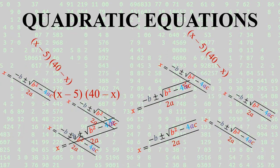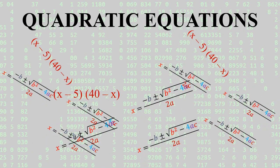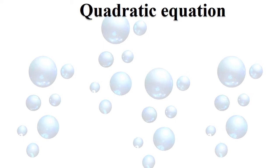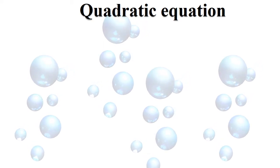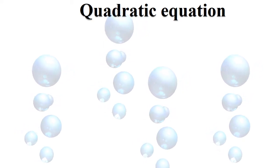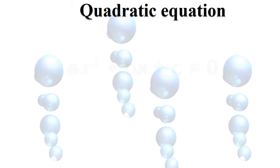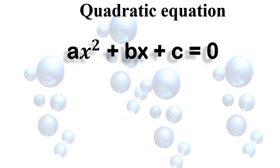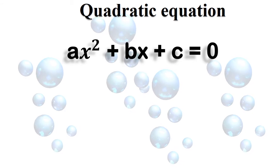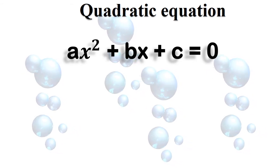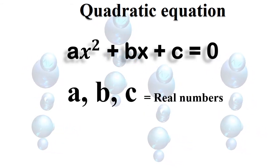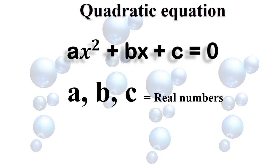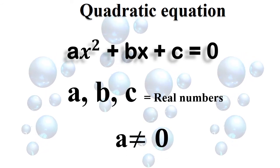Quadratic equations. A quadratic equation in the variable x is an equation of the form ax square plus bx plus c equals zero, where a, b, c are real numbers and a is not equal to zero.